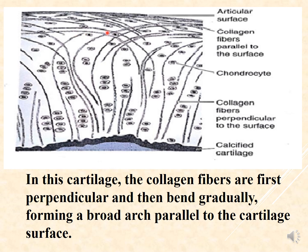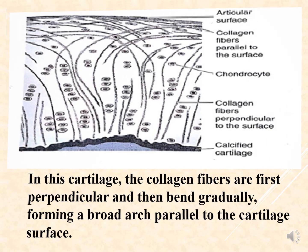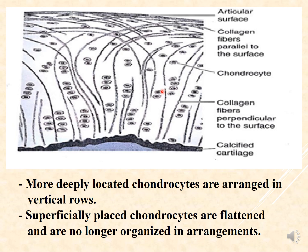The collagen fibers are then bent, forming a broad arch parallel to the cartilage surface. More deeply, the chondrocytes are arranged in vertical rows. Superficially, the chondrocytes are flattened and are no longer organized in a vertical arrangement — the closer to the surface, the more flattened the chondrocytes become.